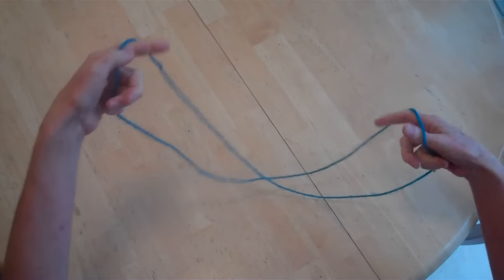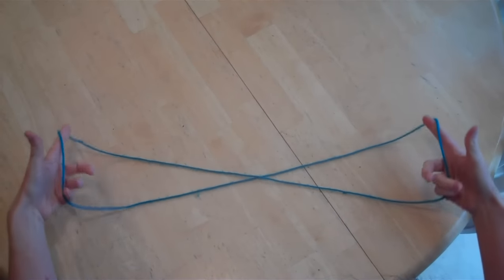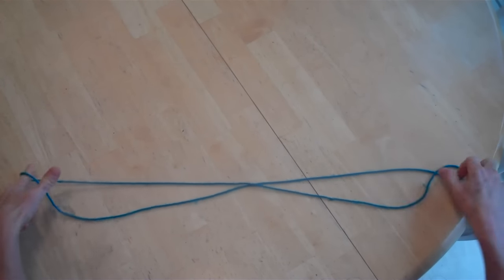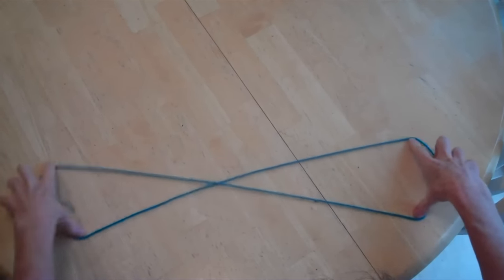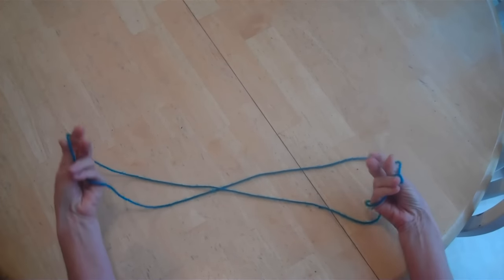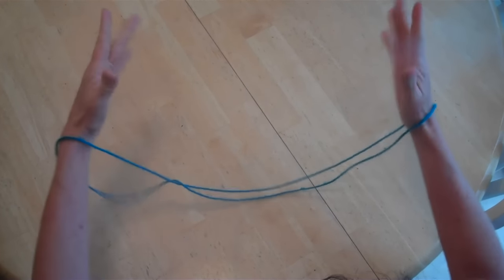For this one you're going to start off taking your loop and making it into an X. Then you're going to put it over each wrist like this.